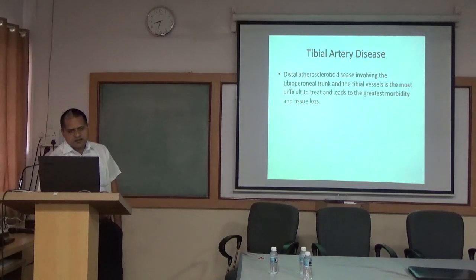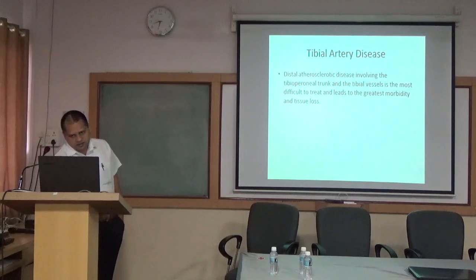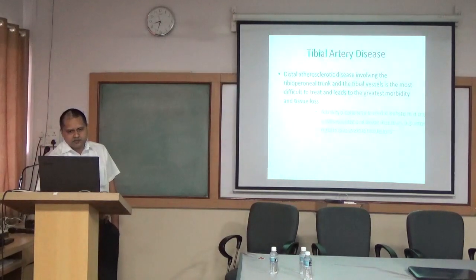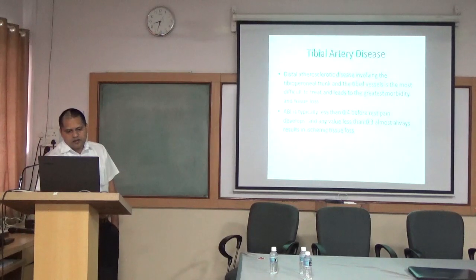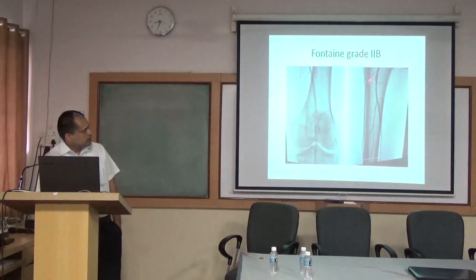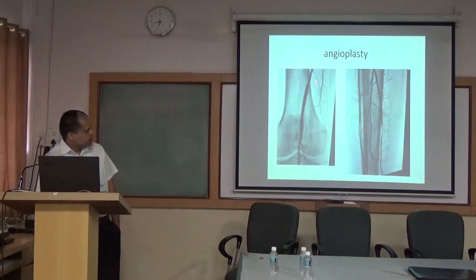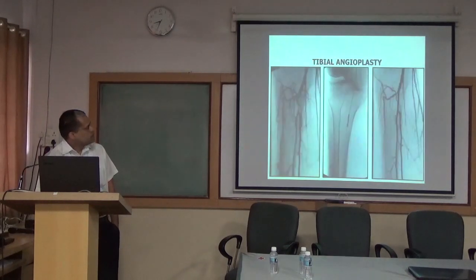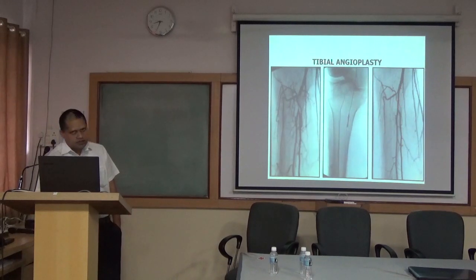If the block is below the knee, distal atherosclerotic disease involving the tibial-peroneal trunk and tibial vessels is the most difficult to treat and leads to the greatest morbidity and tissue loss. In these cases ABI will be less than 0.4 and patients often have rest pain and sometimes tissue loss or ulcer. We show an example of complete popliteal artery occlusion with a lesion in the posterior tibial artery; balloon angioplasty was performed for both, and the tibial-peroneal trunk occlusion was also successfully treated with balloon angioplasty.